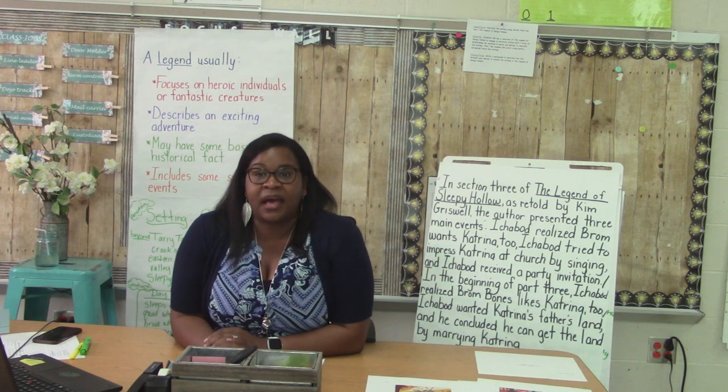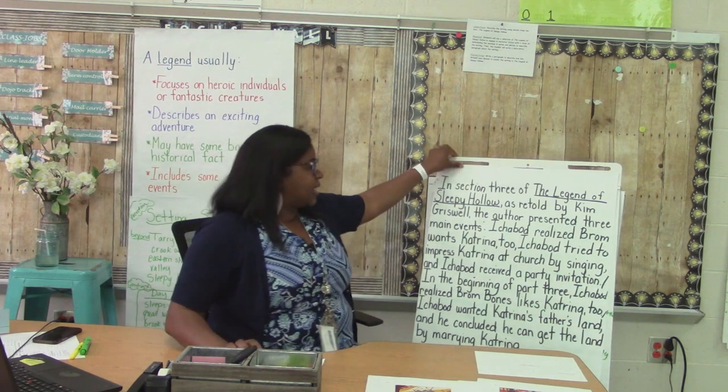I want you to finish our paragraph by describing the other two events: Ichabod tries to impress Katrina at church by singing, and Ichabod receives a party invitation. The chart you created with me about the events will be very helpful to use as an outline because we listed details from the text about each event. Don't forget to think about how you might transition between each of your explanations. Also, be sure to add a concluding sentence.